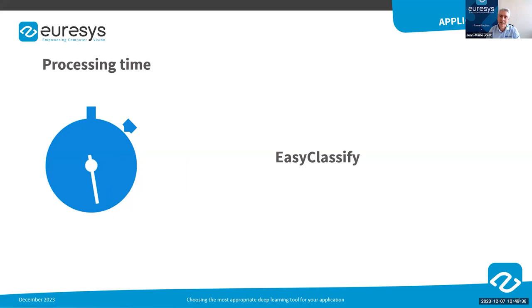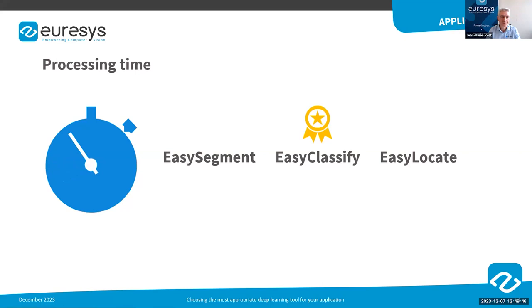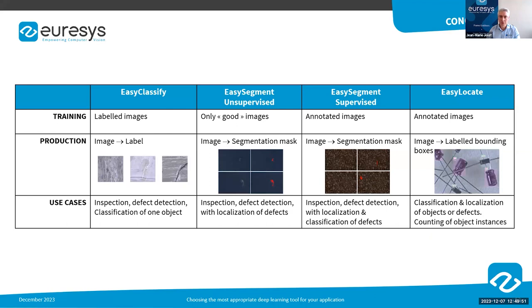Finally, processing time is another aspect to consider. For time-critical applications, the main concern is speed, and in this case EasyClassify should be the preferred solution when possible. There is some functionality overlap between classifiers, segmenters, and object detectors, and choosing the deep learning tool that best fits your requirements is not always obvious. In this presentation we have provided some hints to select the most appropriate tool for your application.